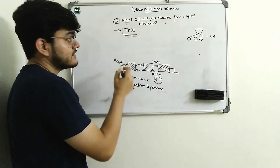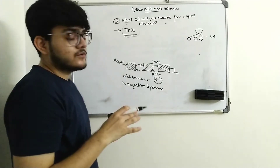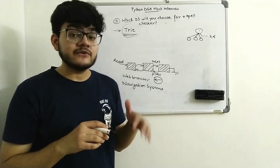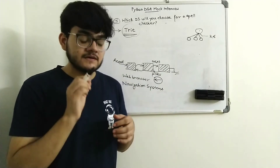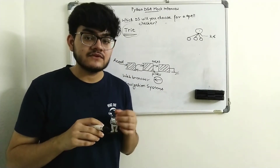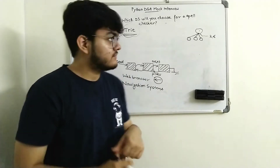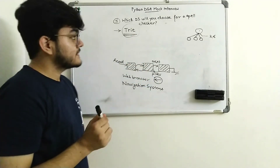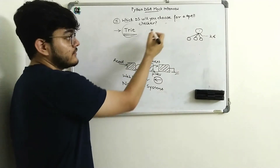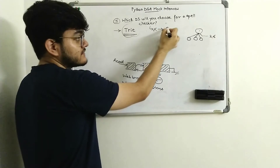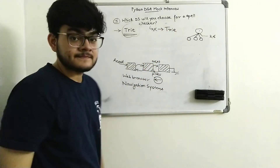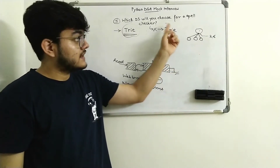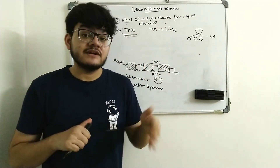When the interviewer asked me this question, I was not able to remember this data structure because I had not studied it in detail. Most of the time when you don't know the answer to a particular question, the interviewer will try to give you some hints. So when I couldn't answer, his next question was: what is a trie data structure? As I was explaining it, I immediately got the hint that it could be used for a spell checker and told him that.